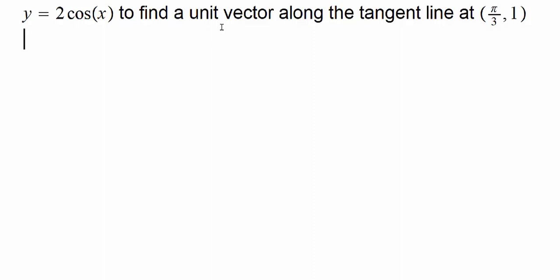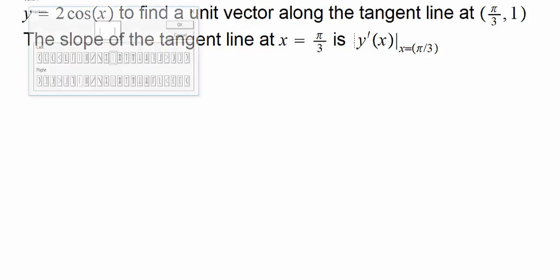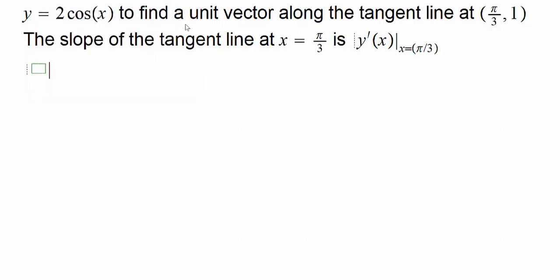Now, we would like to find a unit vector along the tangent line at this point to the graph of this curve. And you can check that these values of the coordinates satisfy this equation. For the tangent line, first we note that the slope of the tangent line at x equals π/3 will be the value of the derivative at x equals π/3.